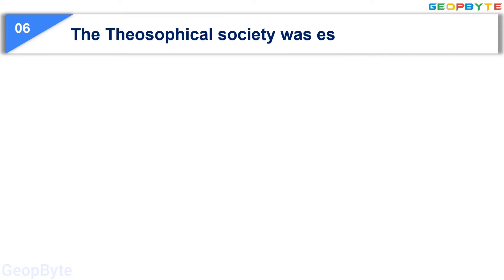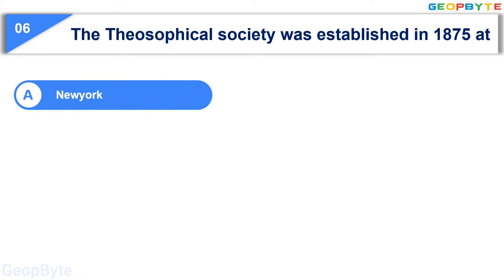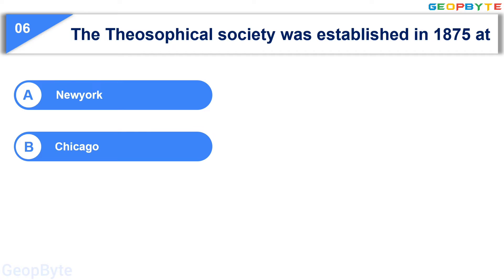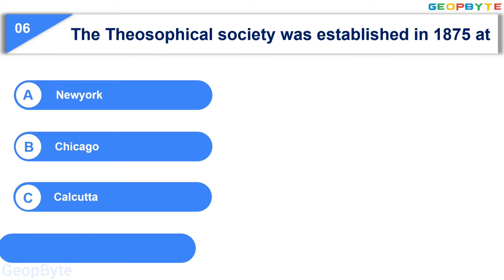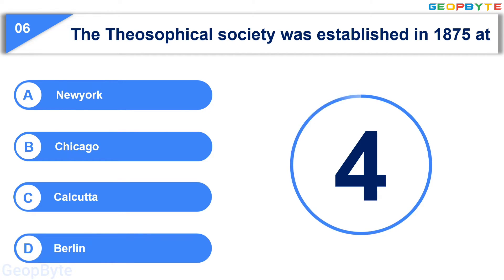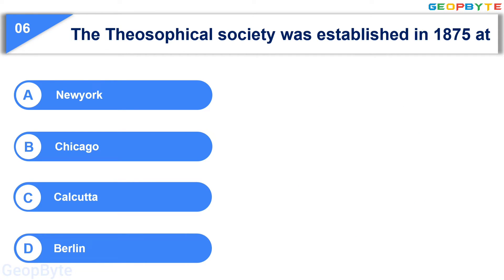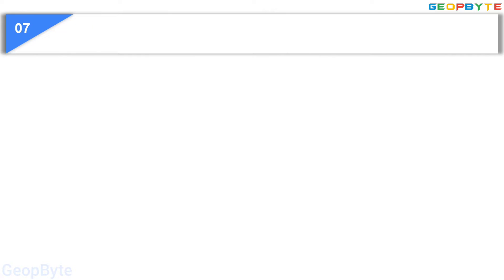Moving to the sixth question: the Theosophical Society was established in 1875 at — Option A: New York, Option B: Chicago, Option C: Calcutta, Option D: Berlin. Your time starts now. Your time is up and the correct answer is Option A: New York.